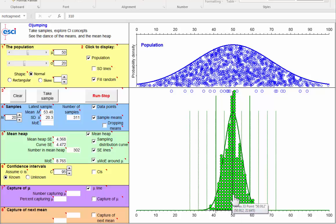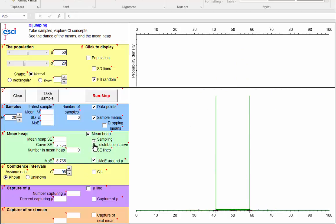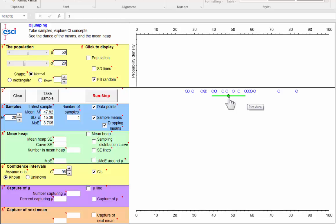But as a researcher, I don't know mu. I don't know the population. And all I have is a single sample. There it is with its mean. Now I'm going to put an interval on that single mean, which extends Moe either side of that sample mean. Where is mu likely to be? Well, in 95% of cases, the sample mean falls within Moe of mu. So if I put this line Moe below and above our sample mean, then in 95% of cases, this interval will capture mu.